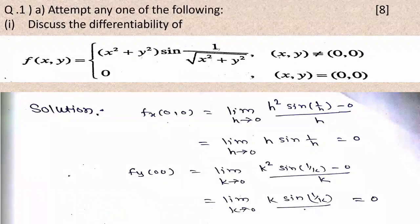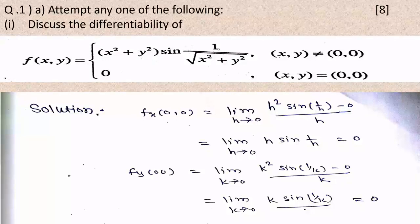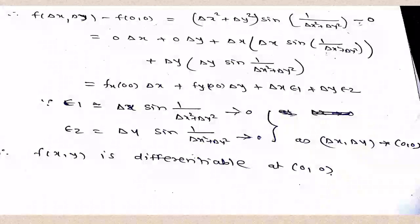We need fₓ and f_y for the differentiability. fₓ(0,0) = limit as h→0 of [h² sin(1/h) - 0]/h = limit h→0 of h sin(1/h) = 0. And f_y(0,0) = limit as k→0 of [k² sin(1/k) - 0]/k = limit k→0 of k sin(1/k) = 0. Thus fₓ(0,0) = 0 and f_y(0,0) = 0. For differentiability we calculate f(Δx, Δy) - f(0,0) = (Δx² + Δy²) sin(1/√(Δx² + Δy²)) - 0, which can be written as 0·Δx + 0·Δy + (Δx² + Δy²) sin(1/√(Δx² + Δy²)).